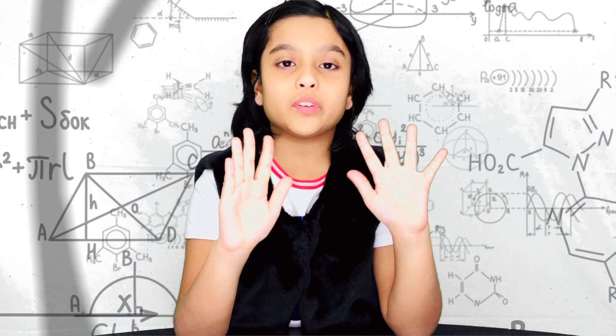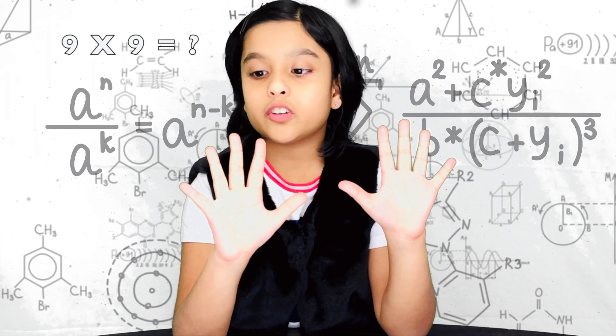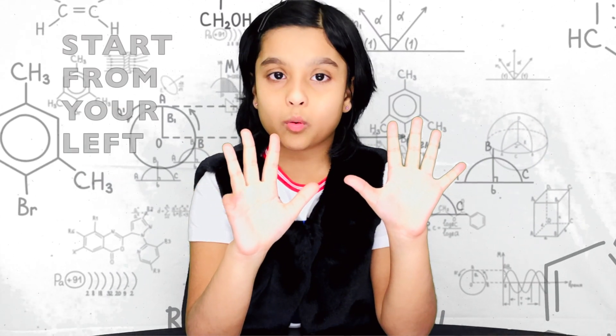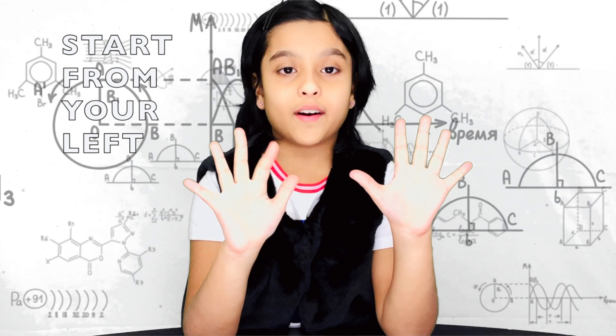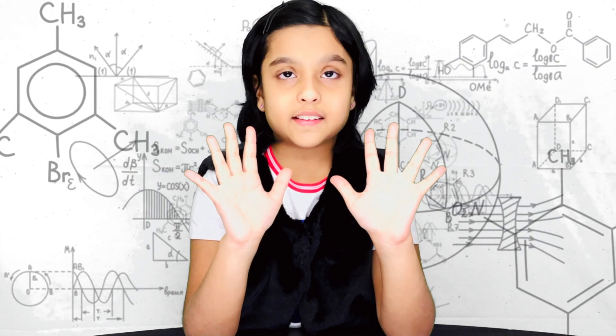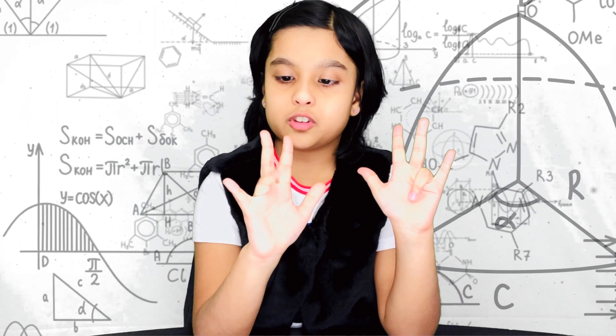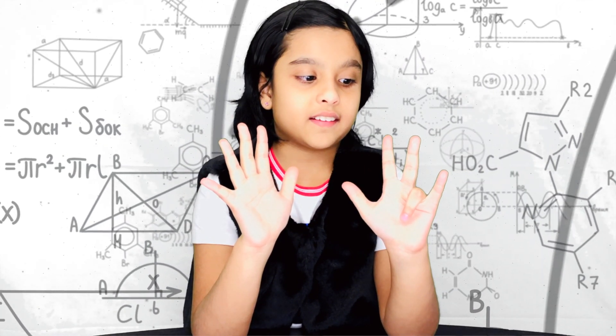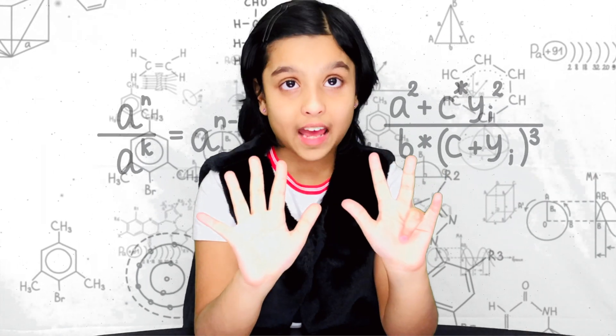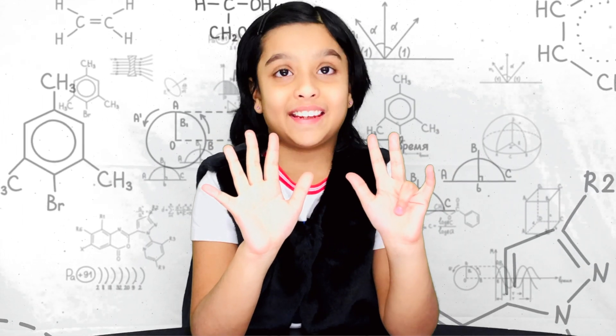I'm going to start another example, 9 times 9. We still have 10 fingers. Now, we're going to count to the number 9: 1, 2, 3, 4, 5, 6, 7, 8, 9. And as the last example we're going to put that finger down. Then we have 1, 2, 3, 4, 5, 6, 7, 8 fingers on the left and one finger on the right. So, the answer is 81.